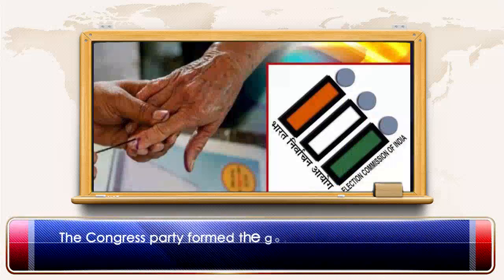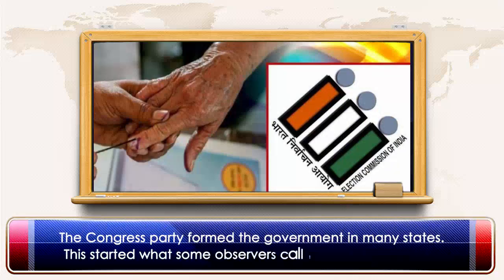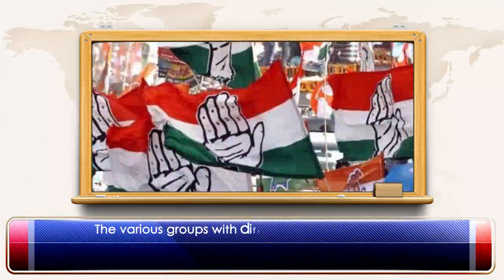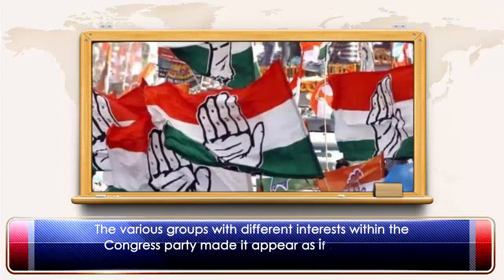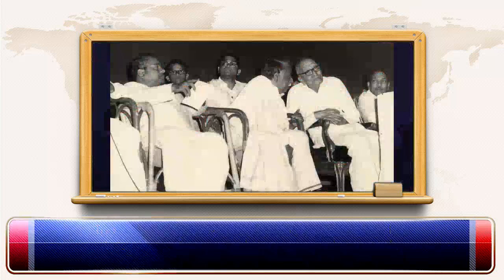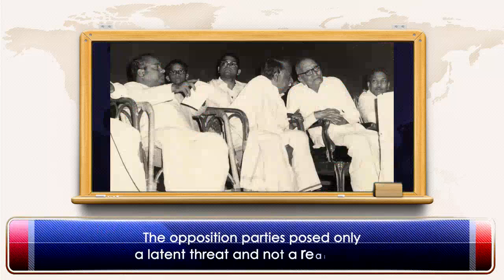The Congress party formed the government in many states, which started what some observers called the Congress System. The various groups with different interests within the Congress party made it appear as if it was a party representing diverse interests and positions. The opposition parties posed only a latent threat and not a real threat.